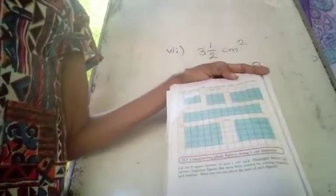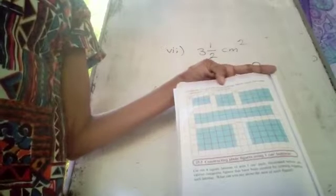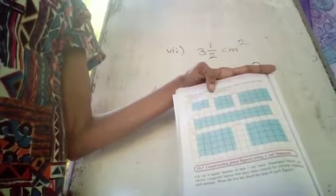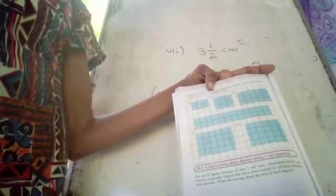Now find the area of each of the following figures which have been drawn on a 1 cm by 1 cm square grid.